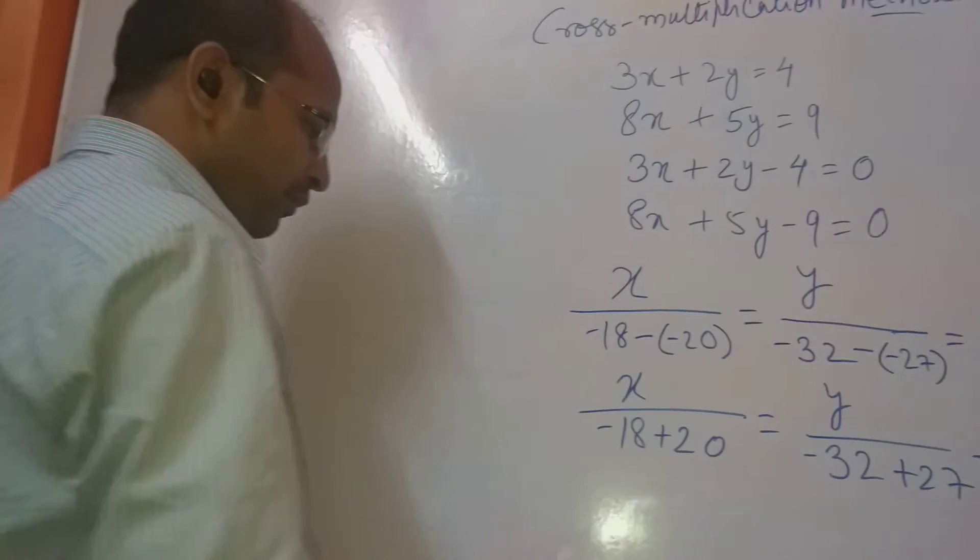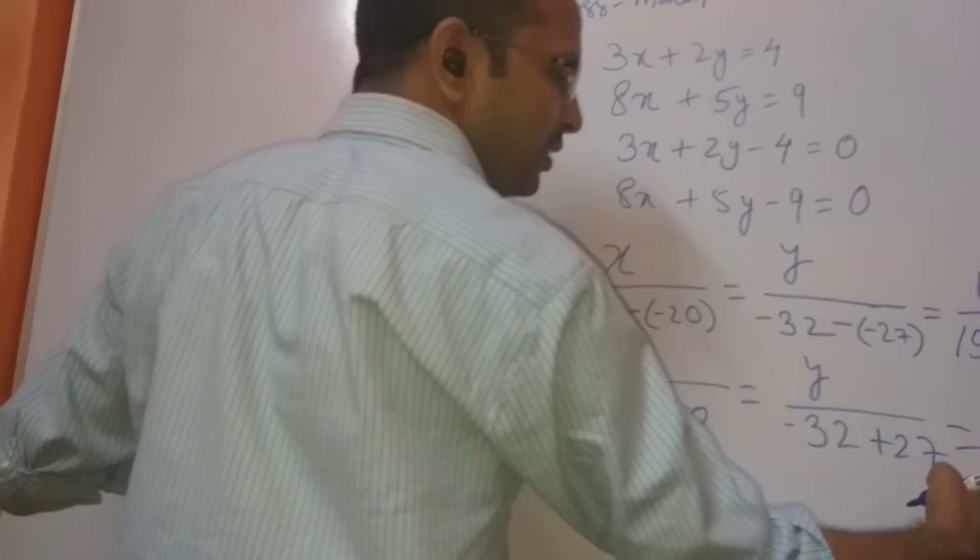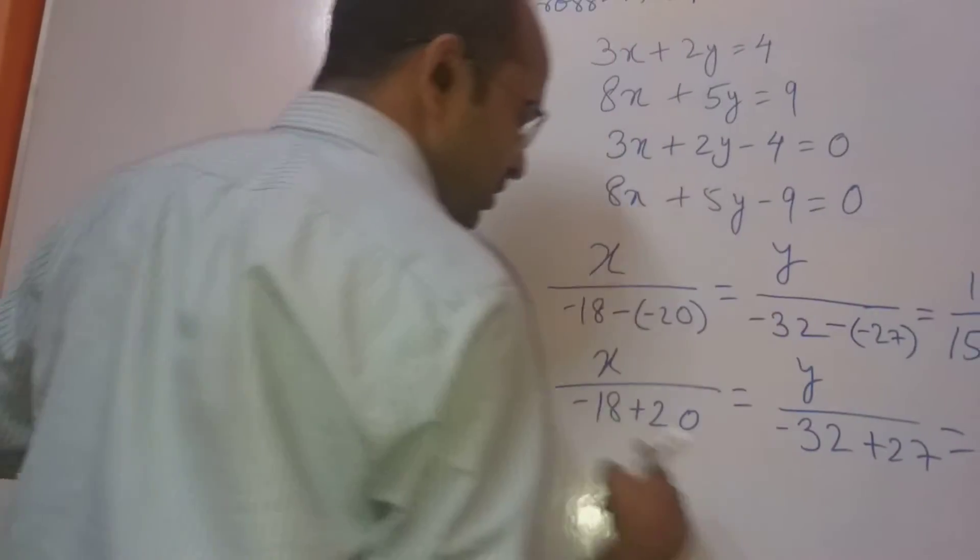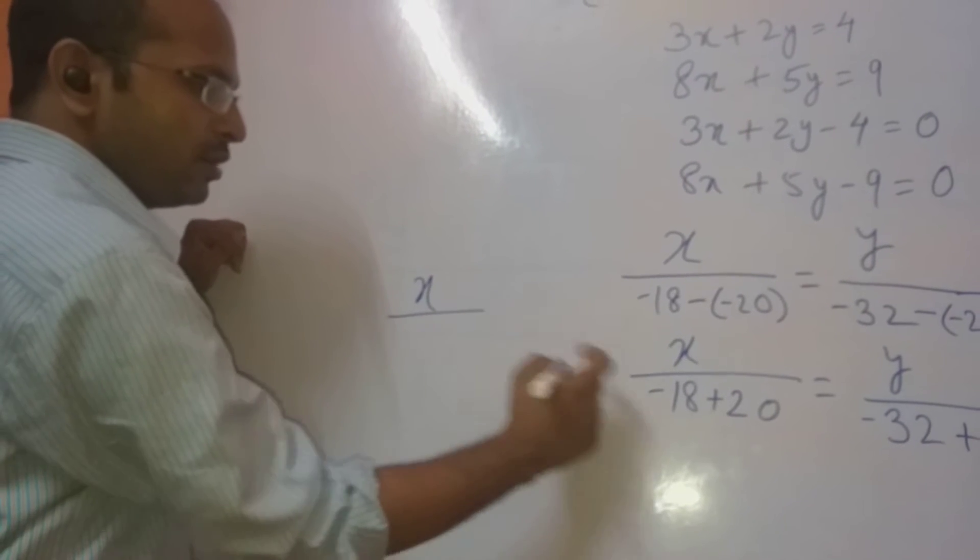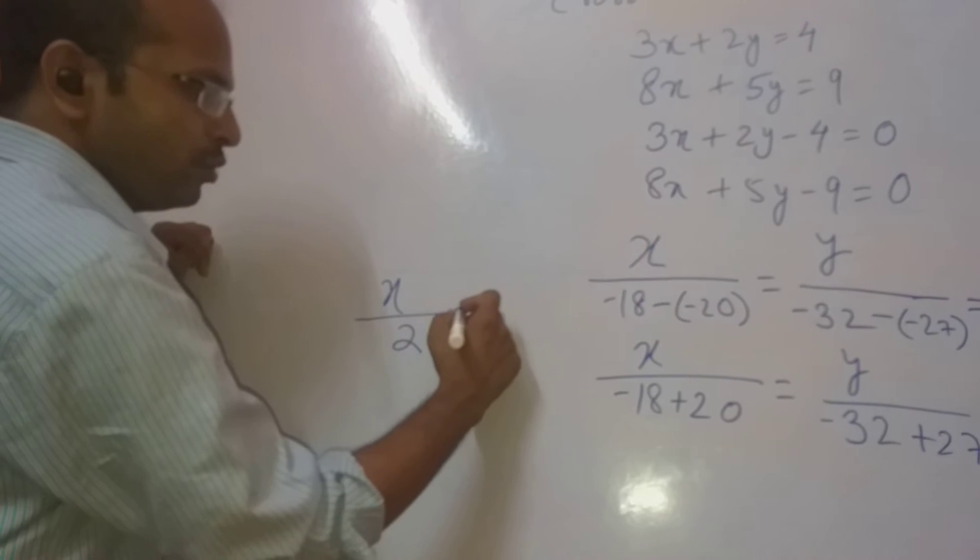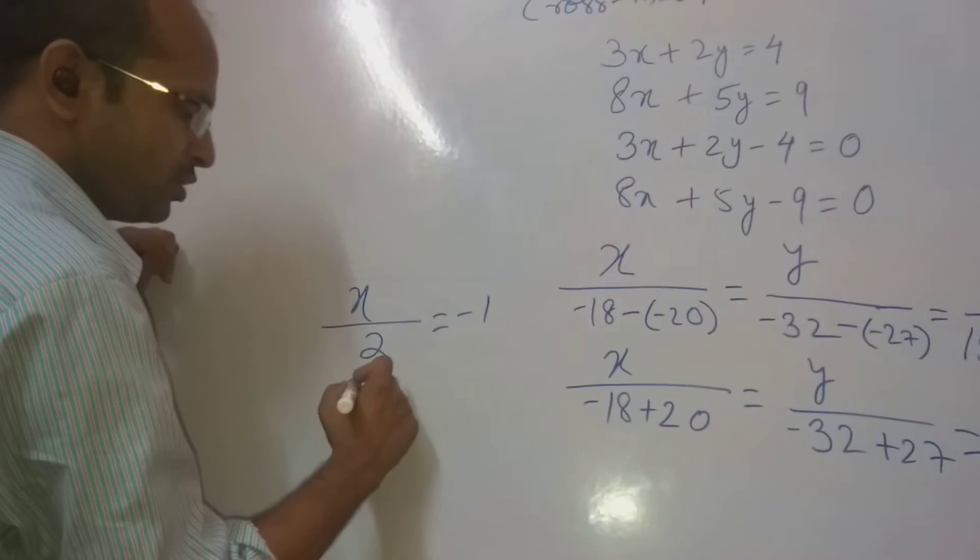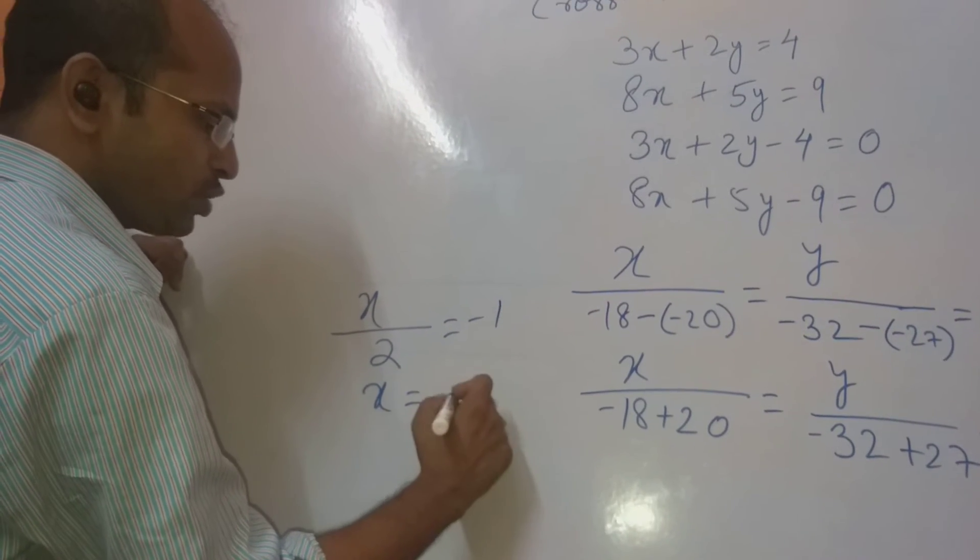So what will we do? First, we will compare this with this, and then compare this with this. So let us write: x by 20 minus 18 is 2 equals minus 1. Therefore, x equals minus 2.